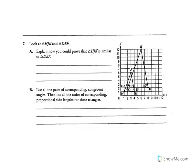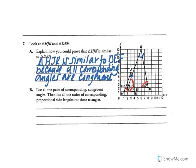Look at triangle HJK and triangle DEF. Explain how you can prove that triangle HJK is similar to triangle DEF. They're similar because the corresponding angles match up: angle K and angle F are both 80 degrees, and angle H and angle D are both 61 degrees. Since two pairs of corresponding angles match, angle J and angle E are also corresponding. Triangle HJK is similar to DEF because all corresponding angles are congruent.